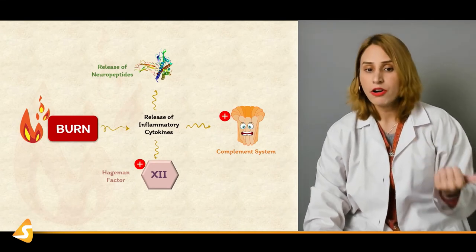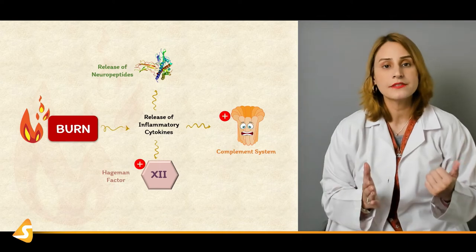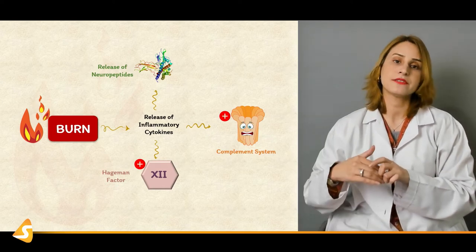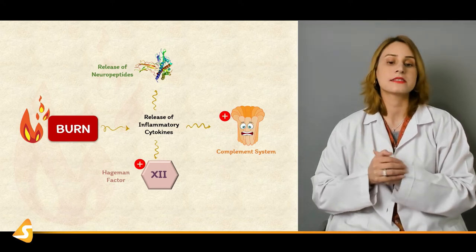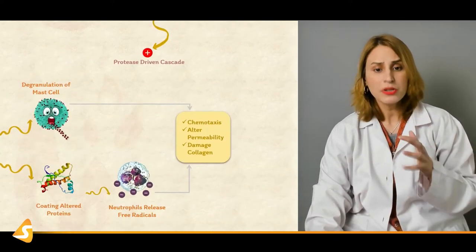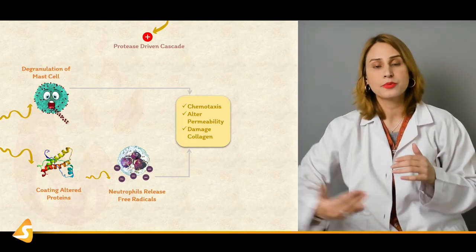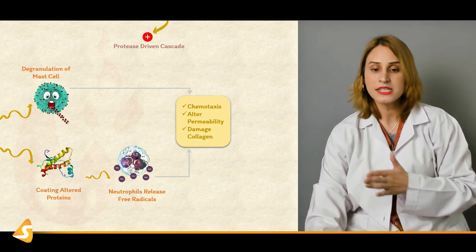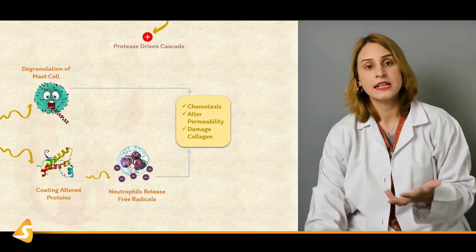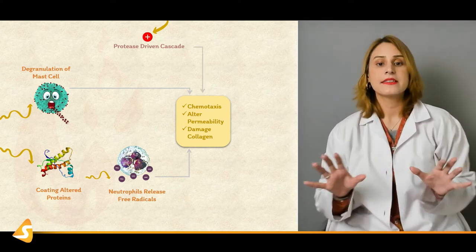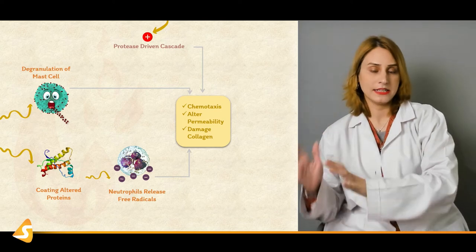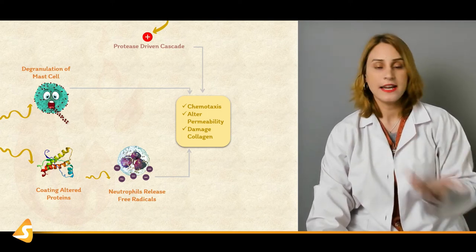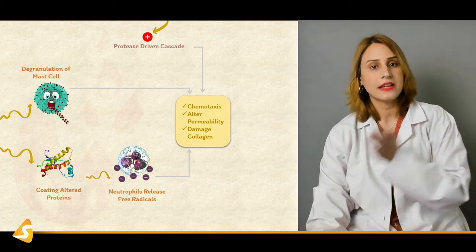Going back — complement system activation leads to release of neuropeptides and activation of the Hagman factor. The Hagman factor increases the protease-driven cascade, leading again to chemotaxis, changes in permeability, and damage to collagen. So all these factors — Hagman factor, complement, neuropeptides, free oxidative radicals, and mast cells — all result in chemotaxis, permeability change, vascular damage, collagen damage, and ultimately tissue edema. That's how the inflammatory process results in burn injury.